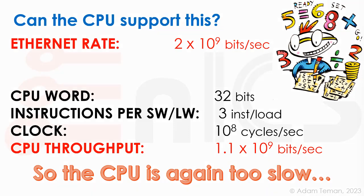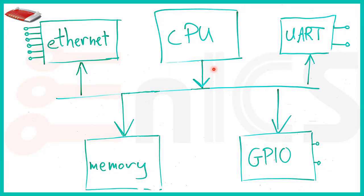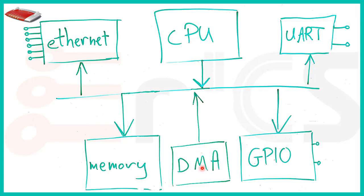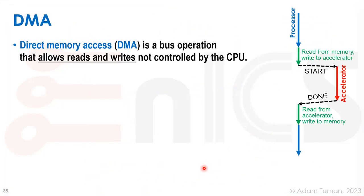The CPU is again too slow. We have the CPU with its Ethernet port over the AHB transferring all this data, but the CPU is too slow to handle it. So we can offload the CPU using a block we call a DMA, or Direct Memory Access.